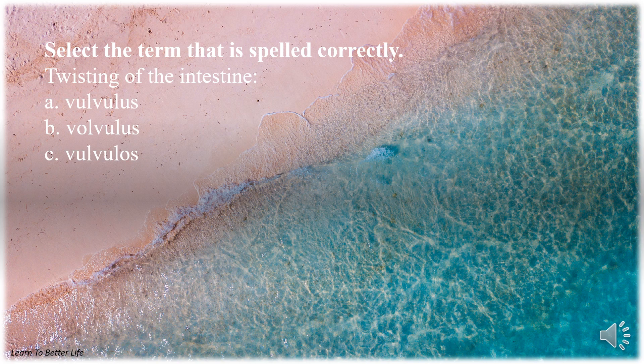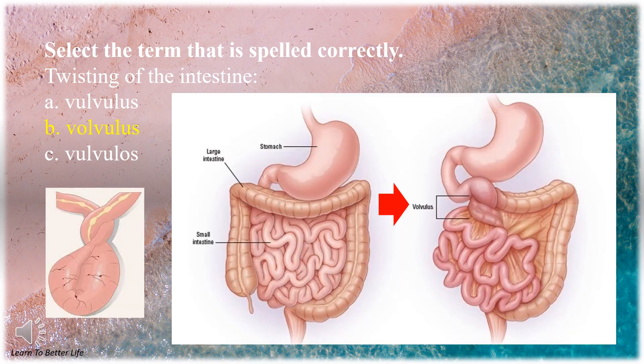Select the term that is spelled correctly. Twisting of the intestine. A. Volvulus. B. Volvulus. C. Volvulus. The answer is B. Volvulus.